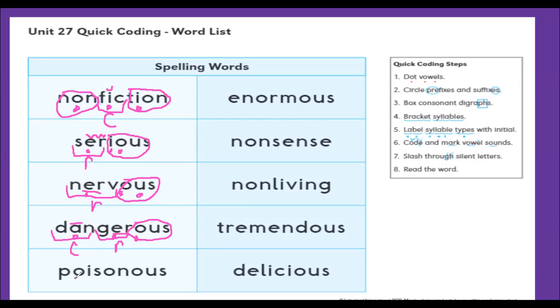Poisonous - dot our vowels. Our O, our I, our O, O and U. Circle our O-U-S.